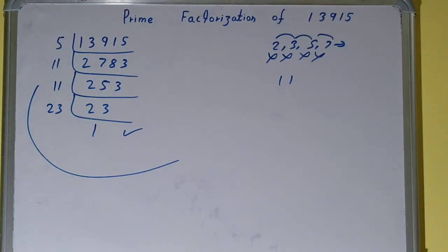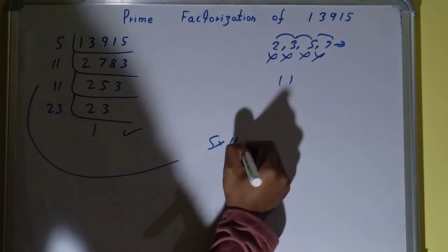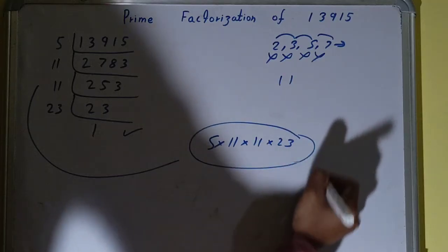And whatever you have on the left-hand side will be the prime factors for the number 13915, that is 5 × 11 × 11 × 23. Now if you want to check whether it is right or not, you can multiply it.